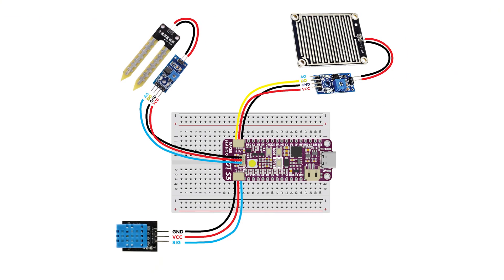For this project, you will need a Maker Feather AI IoT S3, a breadboard, a DHT11 sensor, a moisture sensor, a rain sensor, and quick cable. You can get all these components from the Citron IoT Kit.